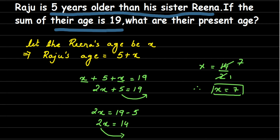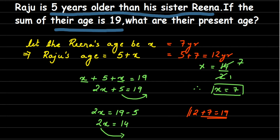So x equals 7 means Reena's age is 7. Then Raju's age will be 5 plus 7, which is 12 years. You can cross-check your answer by adding both ages: 12 plus 7 equals 19, which is exactly what the question stated — the sum of their ages is 19.